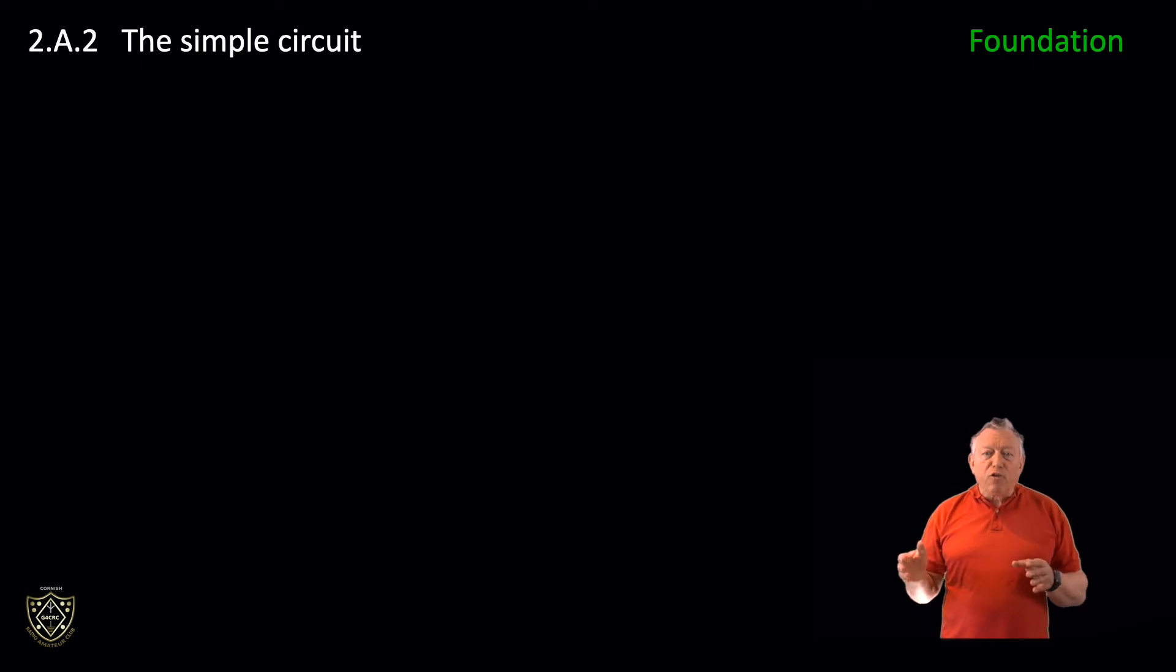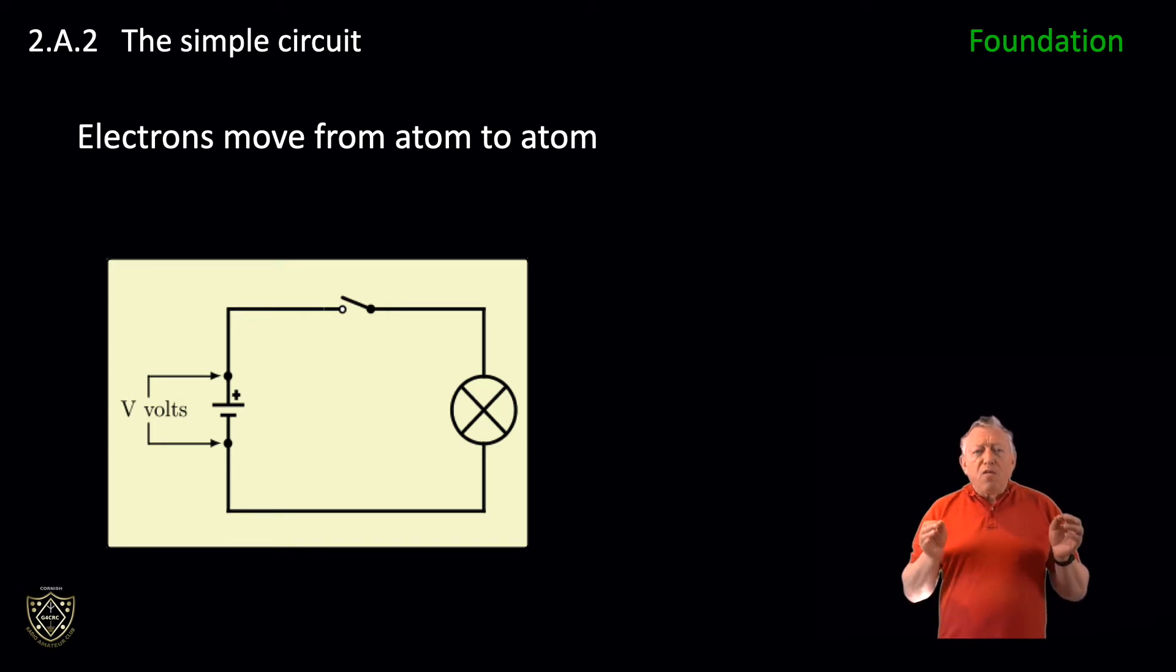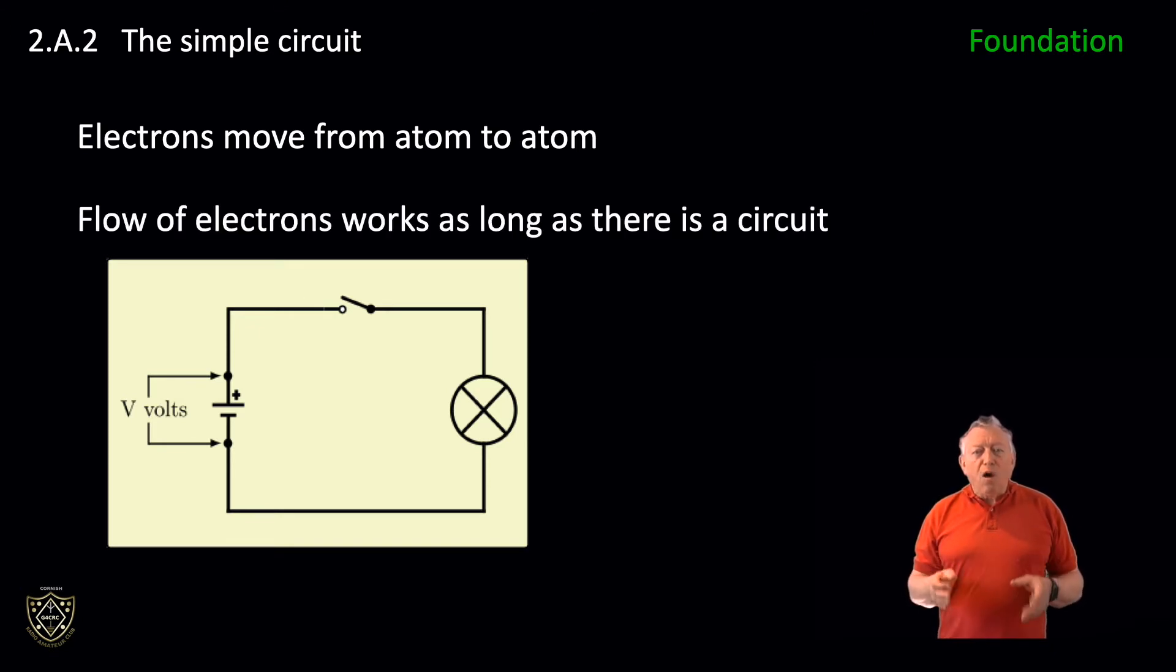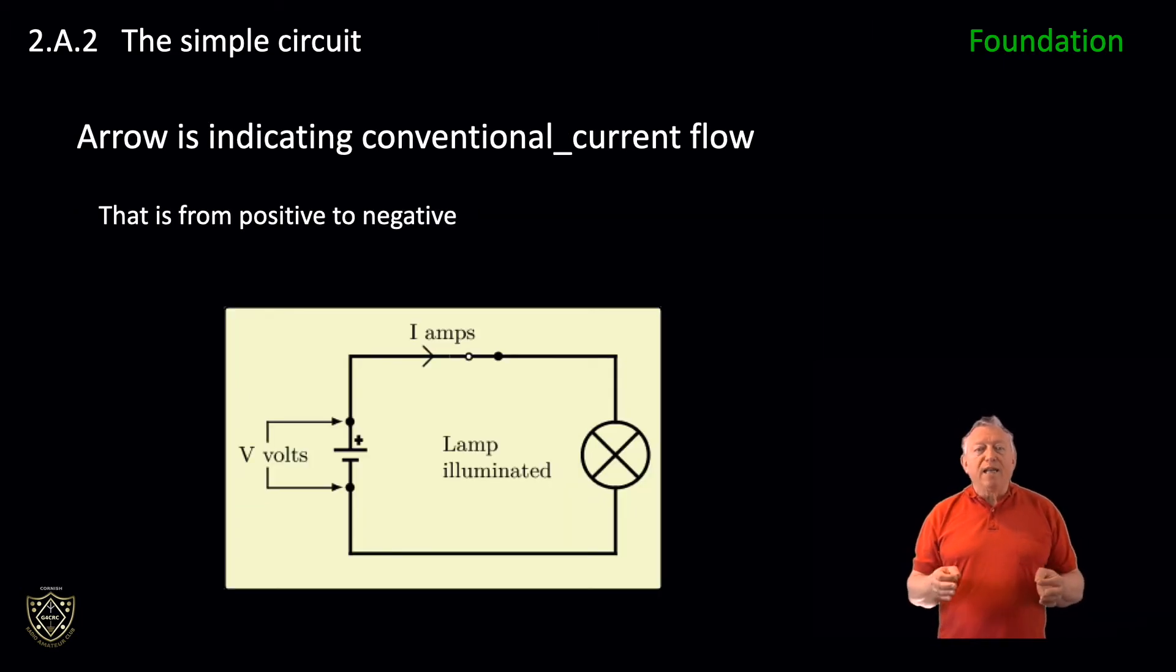Now that we understand that electrons move from atom to atom, we can imagine this as a bit like a game of pass the parcel. The flow of electrons works as long as there is a circuit. During our studies, we will encounter and examine the simple circuit quite a lot. The graphic shows a simple circuit with a single cell, a toggle switch and a lamp. As the switch is open, no current will flow.